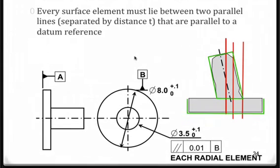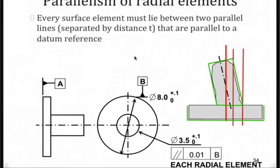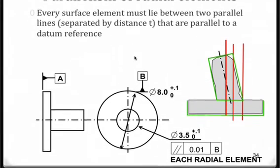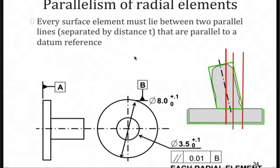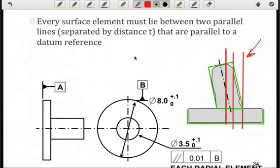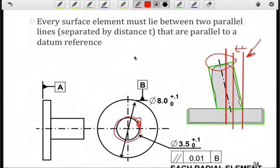We can also look at the surface as we did with perpendicularity. If we drop the diameter symbol and add the annotation that each radial element needs to be contained within the tolerance zone, then we're talking about two parallel lines — it's no longer a cylindrical tolerance zone. We're going to go around the surface of this feature and ensure that the entire surface, as individual elements, are within this tolerance zone. The width is still 0.01, but each time I check a radial element it's independent of the previous one. Our mating envelope is used to find datum B, as in the previous example, indicated by that red line.